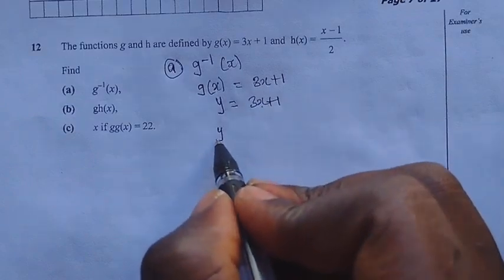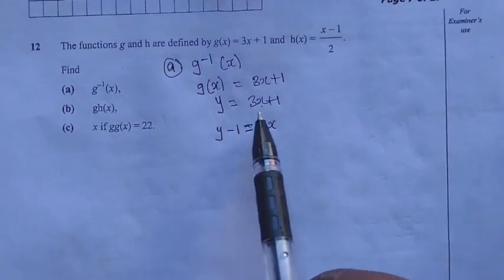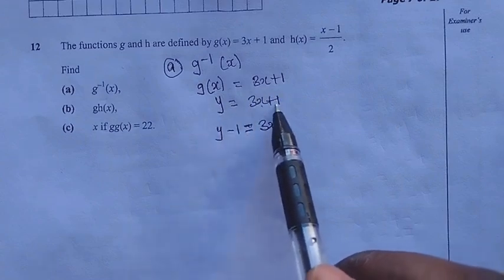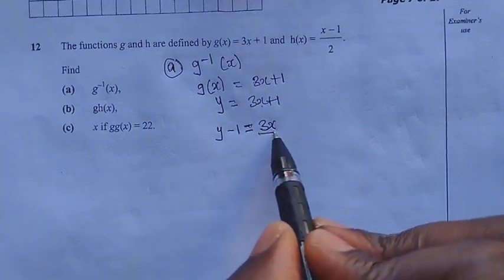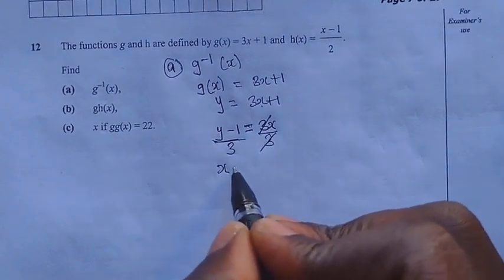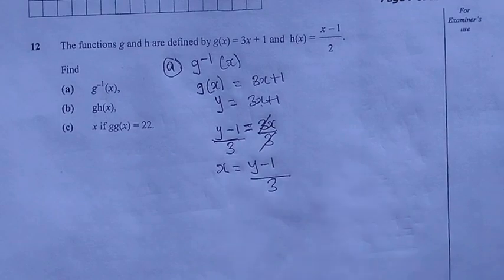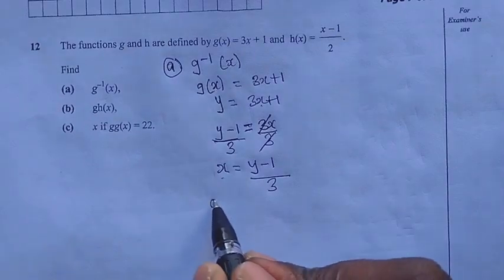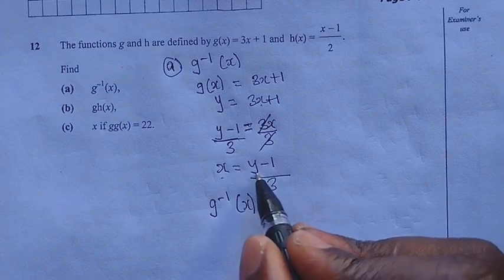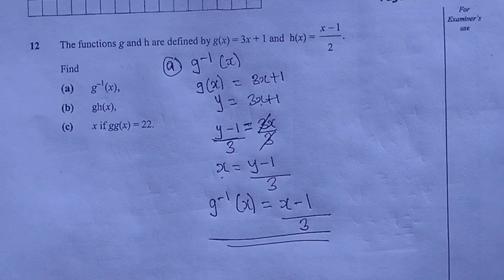So we say y - 1 = 3x. We want to make x the subject of the formula. This 3x stays as it is, and this positive 1 moves to where y is, becoming negative 1. From here, divide both sides by 3, so that the 3s cancel. Therefore x = (y - 1) / 3. The question asked for g inverse of x, so where there is y we substitute x, giving us g⁻¹(x) = (x - 1) / 3.